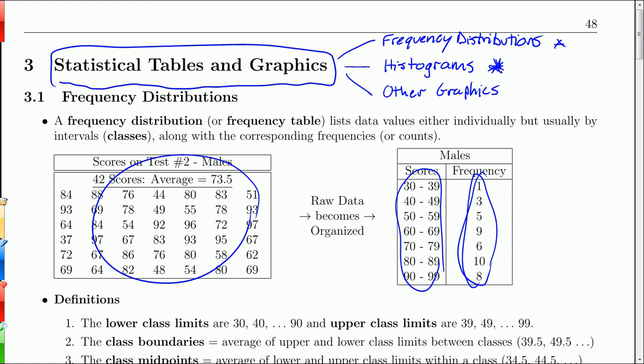And so after we do the histograms, we'll look at other types of graphics. The other types of graphics that we'll consider are bar graphs in general, stem and leaf plots, Pareto charts, pie charts, scatter plots, and time series graphs. So there aren't very many calculations required in here.